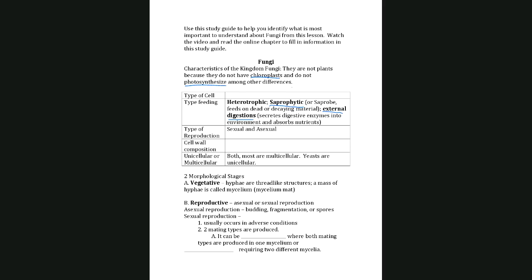Fungi can reproduce both sexually and asexually. An important thing to know is their cell wall is made of chitin, which is a polysaccharide. Plants also have cell walls, but plant cell walls are made of cellulose — a different chemical composition. Fungi come in unicellular varieties and multicellular varieties; the multicellular are the ones we're most familiar with, like a mushroom or bread mold.